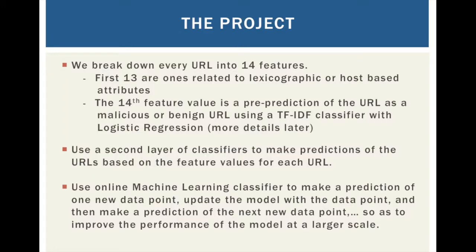To summarize our project, we break down every URL into 14 main features. The first 13 features are those related to lexicographic or host-based attributes. The 14th feature value is a pre-prediction of the URL as malicious or benign, using a TF-IDF classifier with logistic regression.